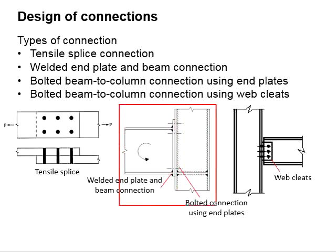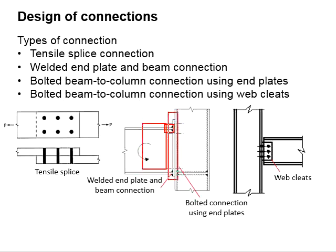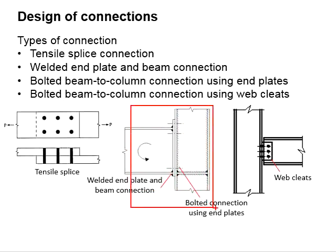Taking this as an example, we need to check the weld between the beam and the end plate. And then we need to check the bolted connection between the end plate and the column. The strength of the connection will be the weakest of the two resistances mentioned just now.